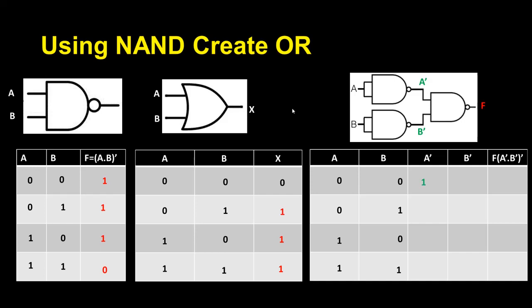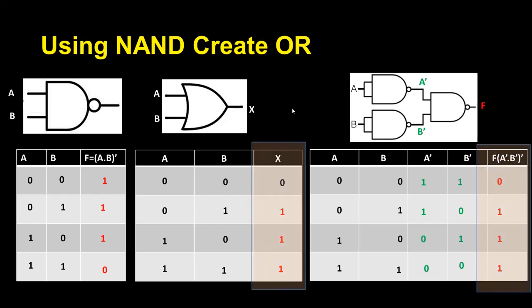For A and B I create all possible combinations, then I write A-bar and B-bar. Finally I write A-bar · B-bar, then the entire expression bar as the output. You can see both outputs are the same, therefore using a NAND gate I can create an OR gate as well.